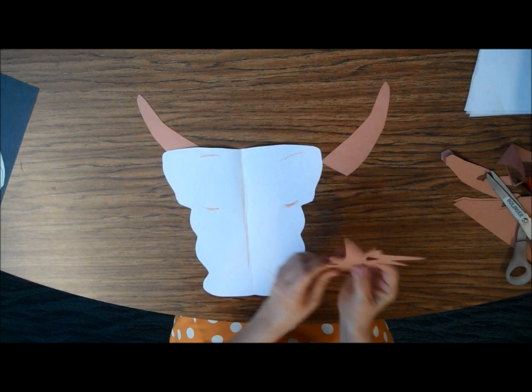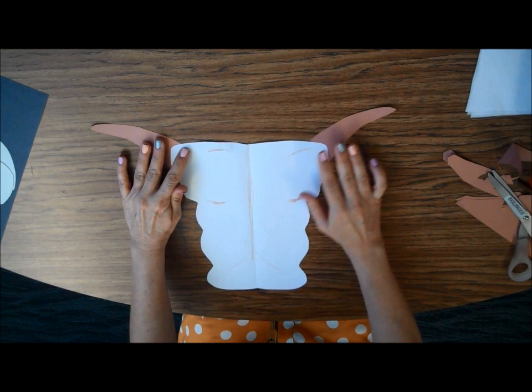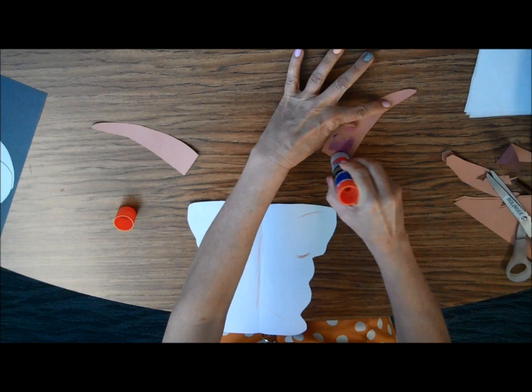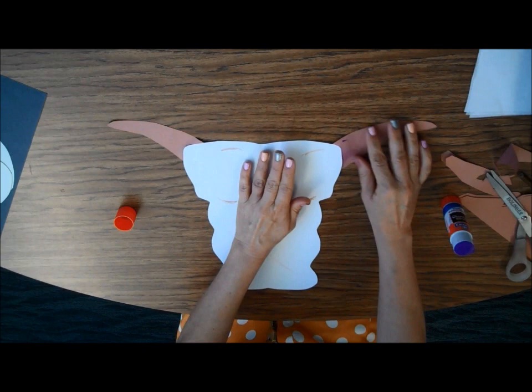And I could do antlers instead if I wanted to. Okay? So I'm going to go ahead and use the horns. And I think I'll make them going down like Georgia O'Keeffe did in her painting. But you can make them going the opposite way if you want. So I'm just going to put a little glue stick here. And there are the antlers.